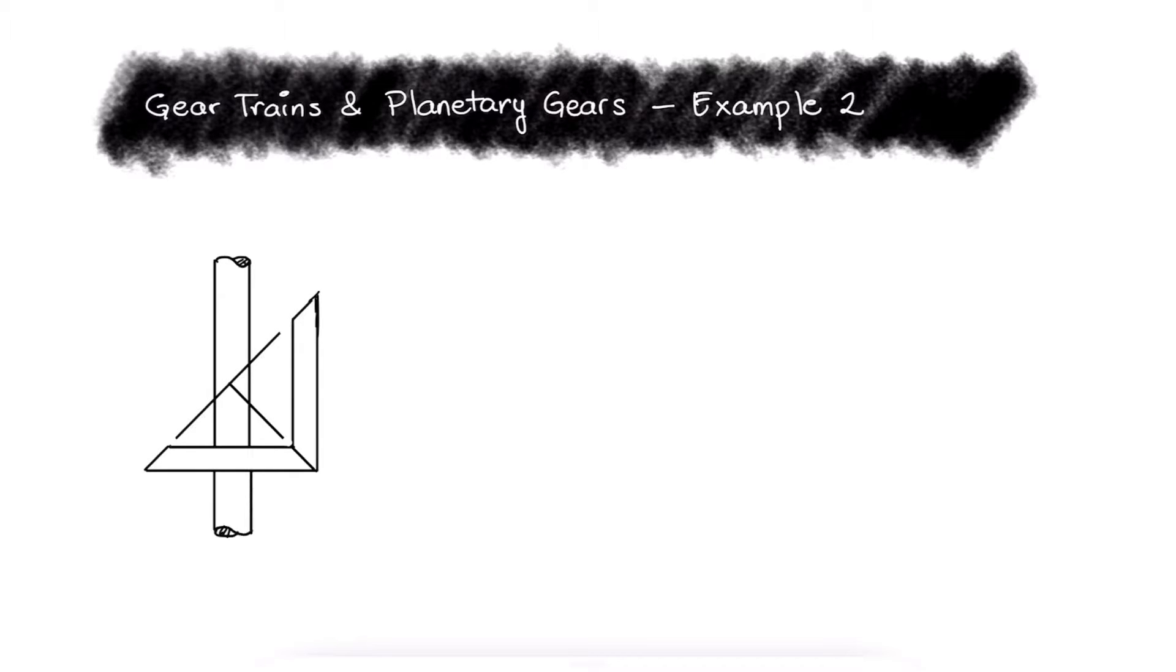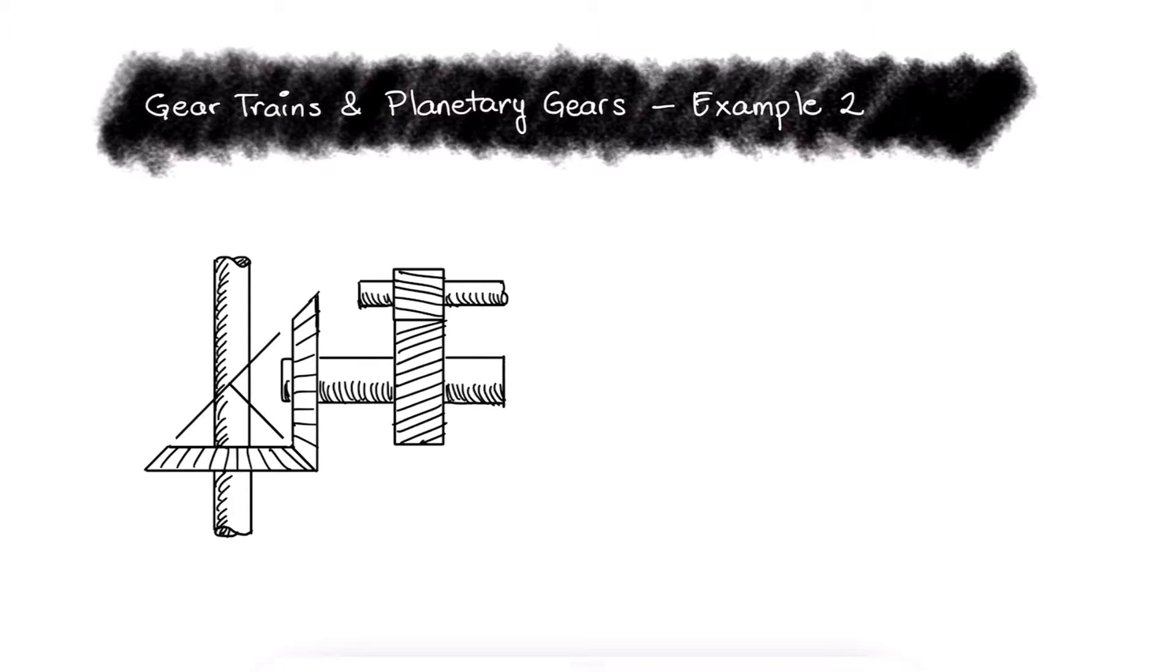For the gear train shown, what is the speed and the rotation direction of shaft C, and what is the distance between shafts A and B if shaft A is rotating at 540 revolutions per minute?